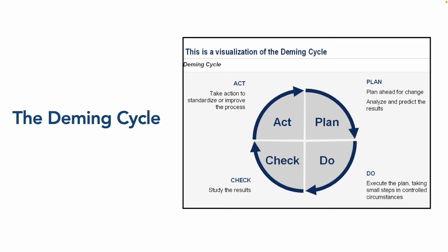The Deming cycle is a very simple visualization. You start by planning and deciding what you're going to build and how you're going to do it, then you actually do the task — you execute the plan and create the product. Then you review and study the results: this is your quality checking and testing. Finally, you act and improve the process — how do you become more efficient in the next iteration, how do you improve the quality of the product?